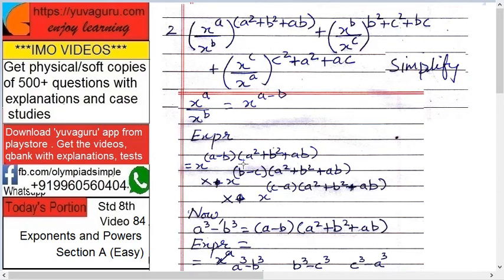Similarly for others, x raised to b minus c into b squared plus c squared plus bc, plus x raised to c minus a into c squared plus a squared plus ac.